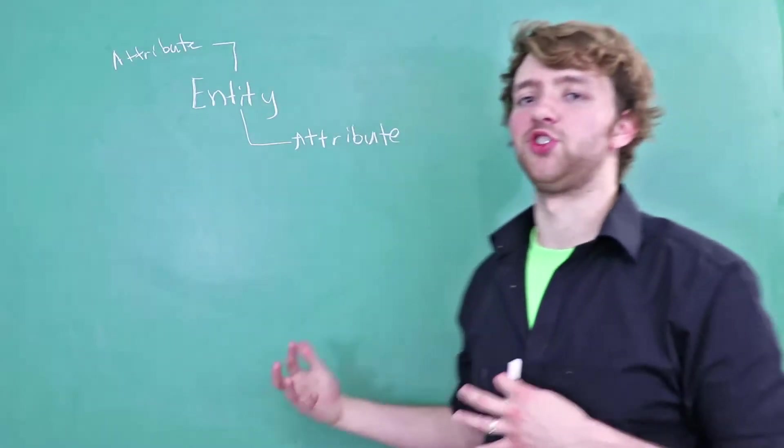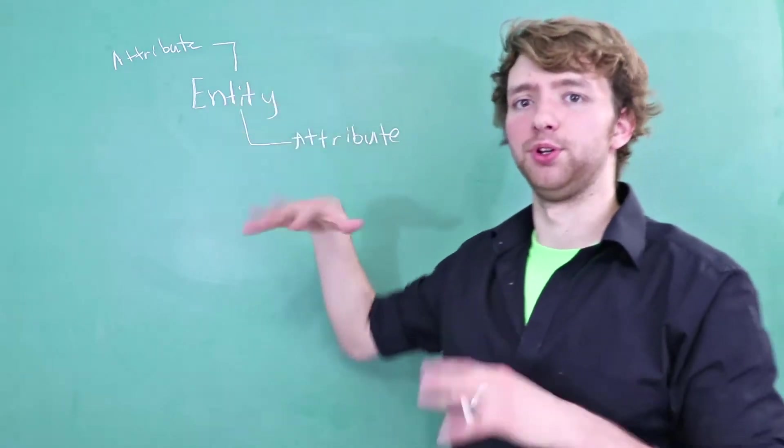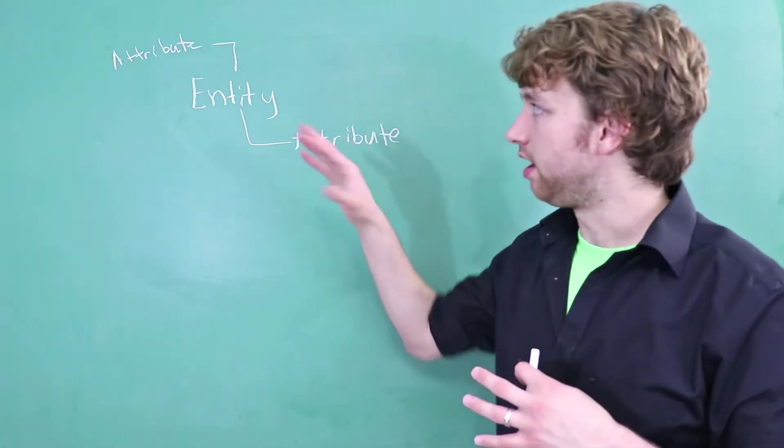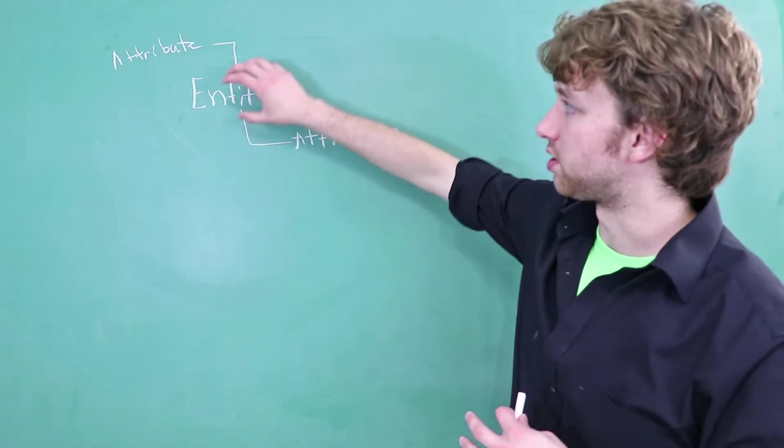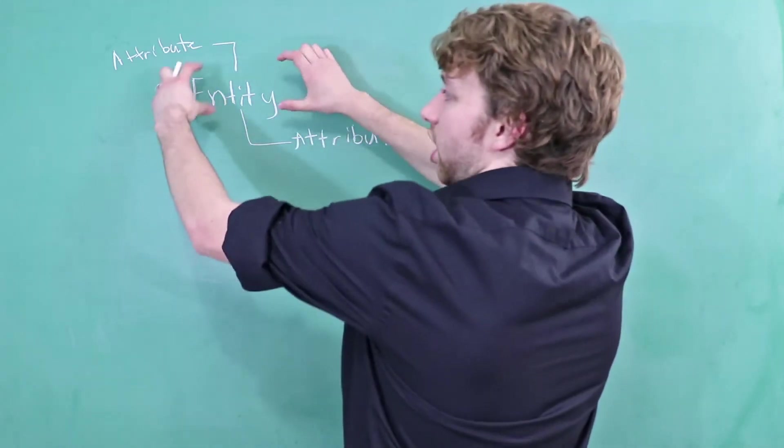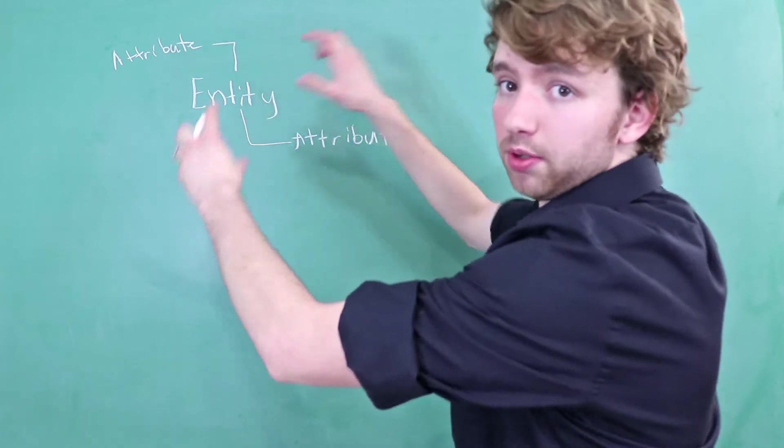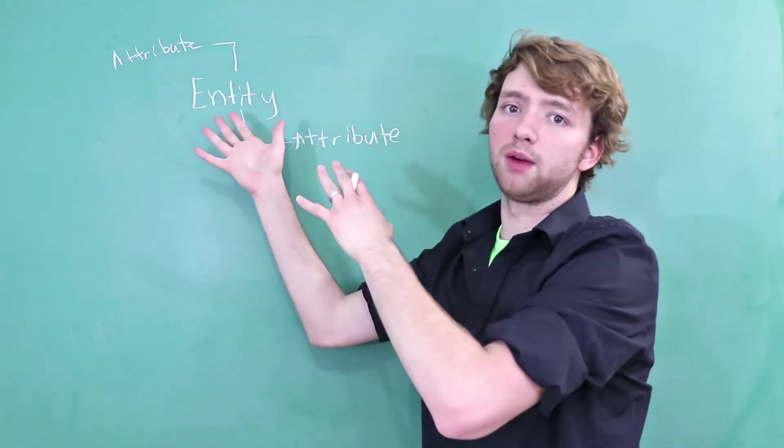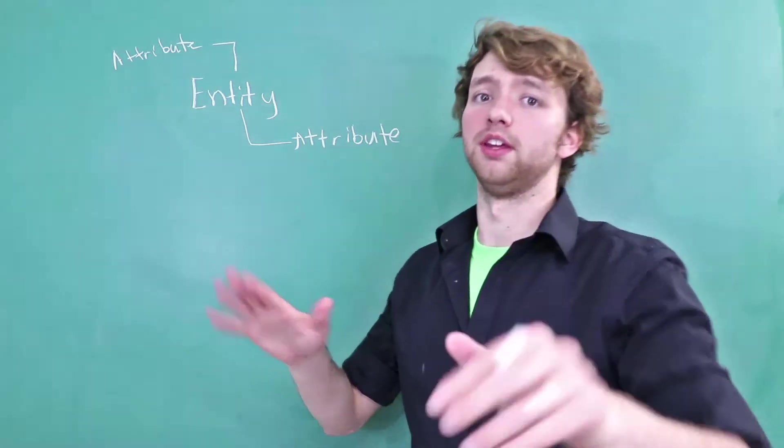This is obviously very general using entity and attribute and all kinds of fancy words, but essentially what you need to know is that sometimes we are going to be storing something as the object and other times we're going to be storing things as something describing the object. Trust me, that'll make more sense—just give me a minute.